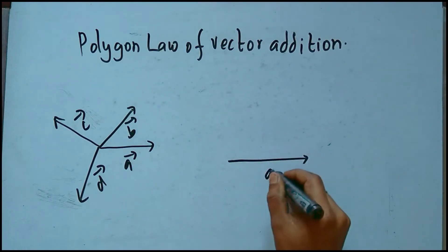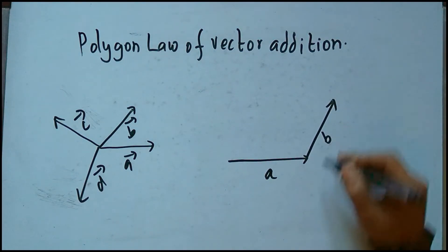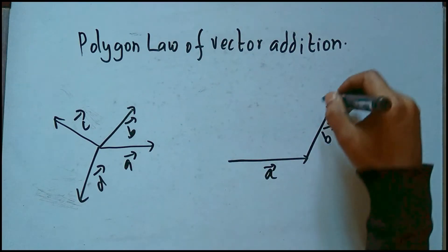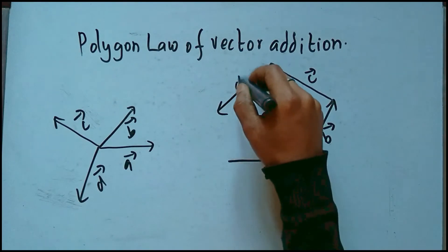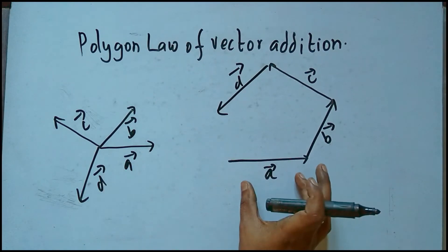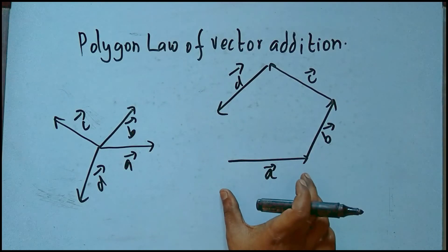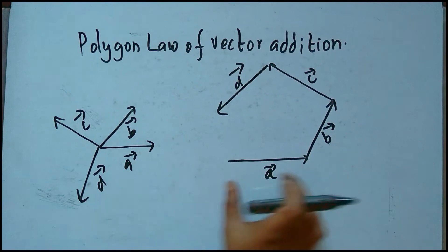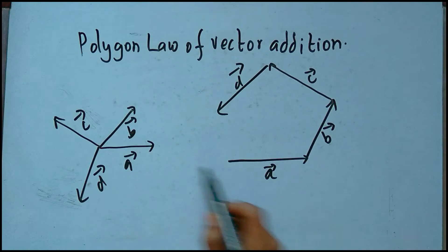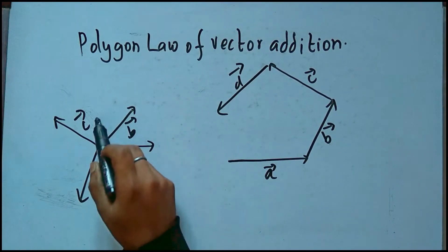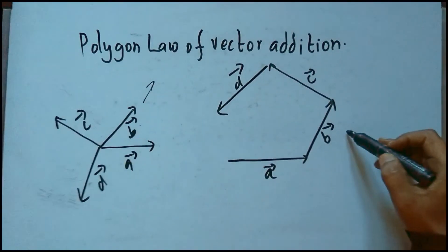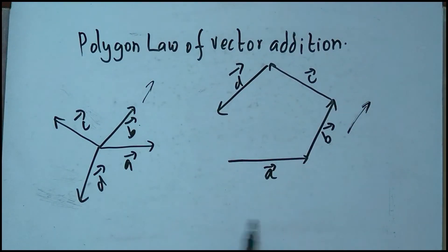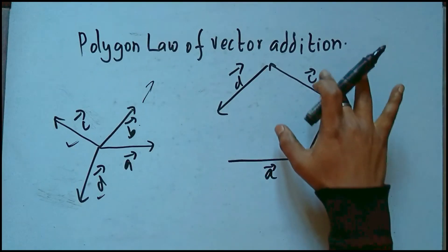So what we do here is we draw vector A, then we continue with vector B in the same order, then we draw vector C in the same order, and we draw vector D in the same order. Vector A here and vector A in the original are equal vectors — they may look bigger or smaller but they are proportional, so the lengths represent the same magnitude. The same applies to vectors B, C, and D.